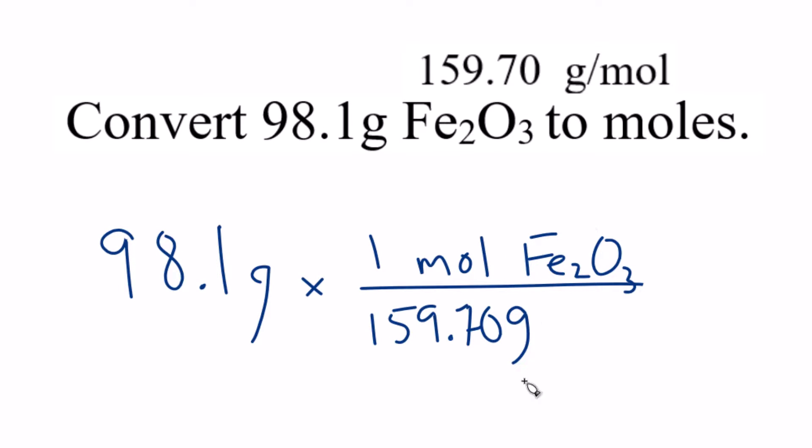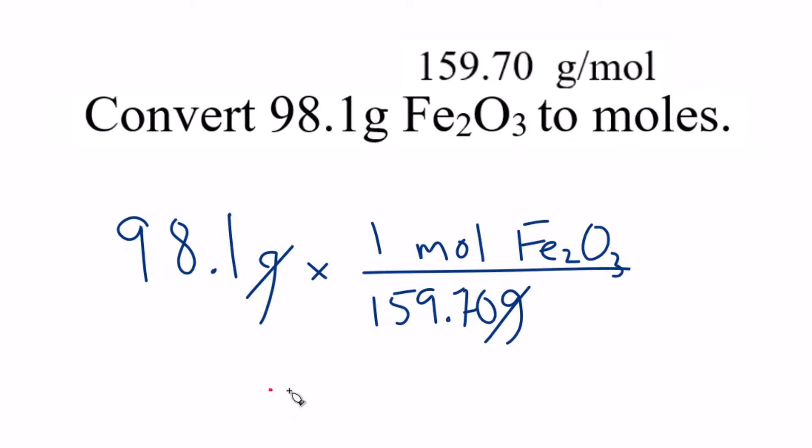So now we multiply and then we divide. Grams are going to cancel out. Again, we're left with moles. And we get the same answer, 0.614 moles of iron(III) oxide. So it's the same basic thing, this is just using conversion factors. We know we're right because the units canceled out.